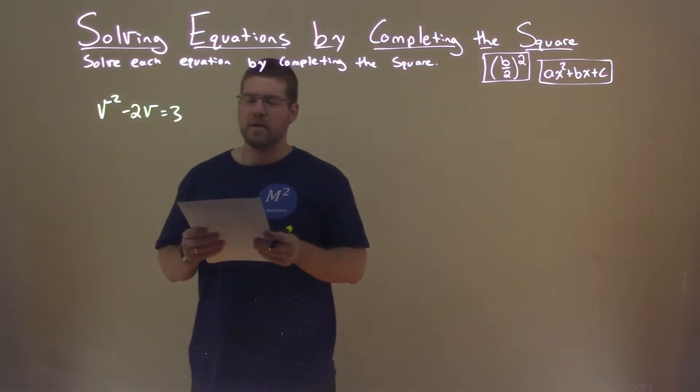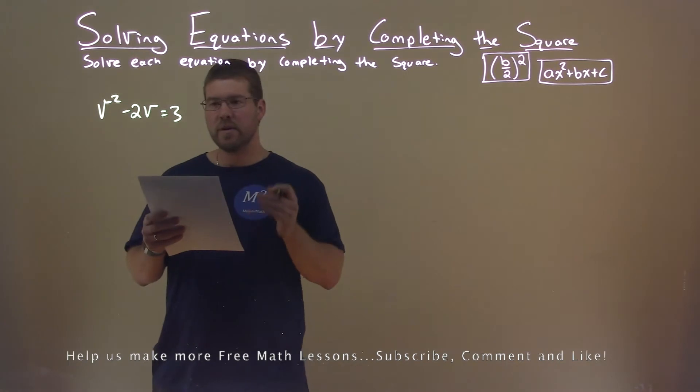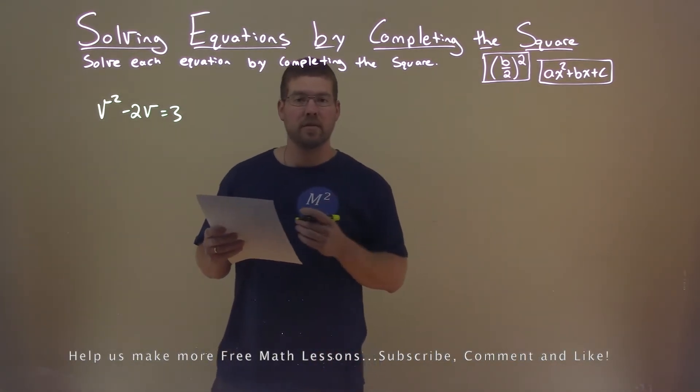We're given this problem right here, v squared minus 2v equals 3. We want to solve this by completing the square.